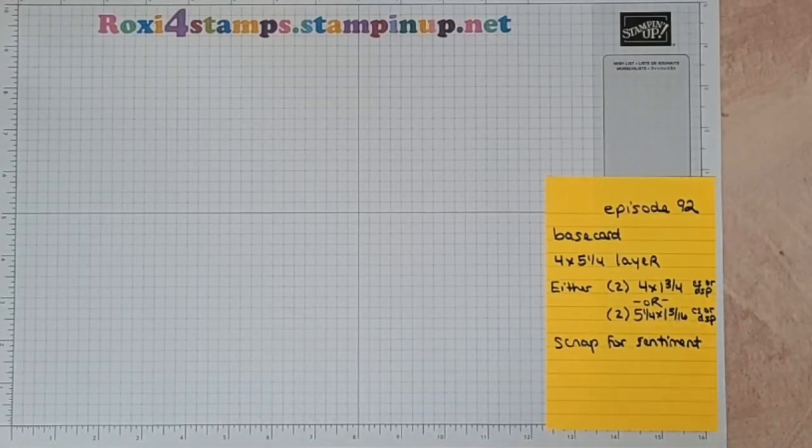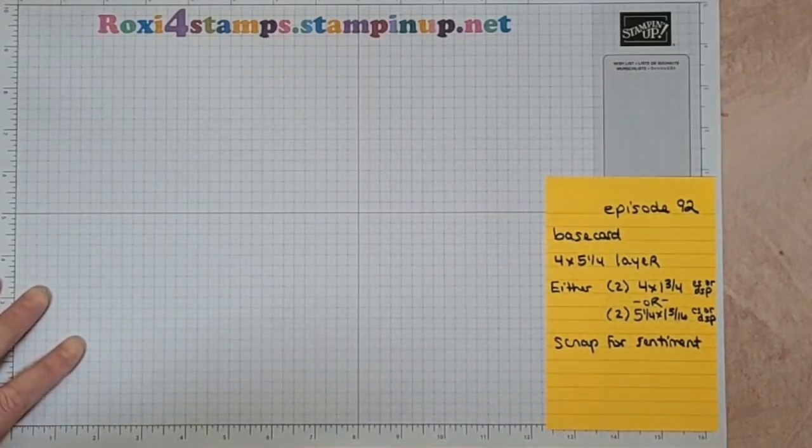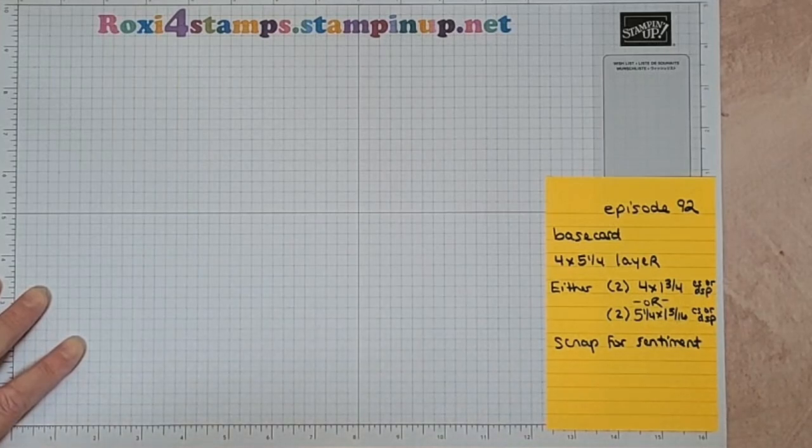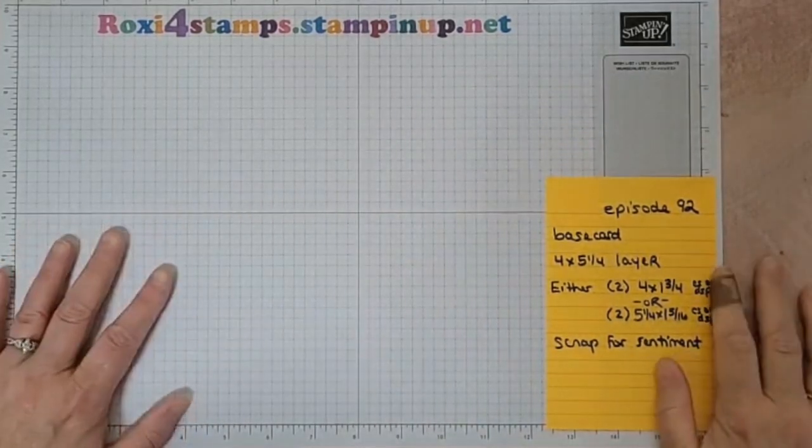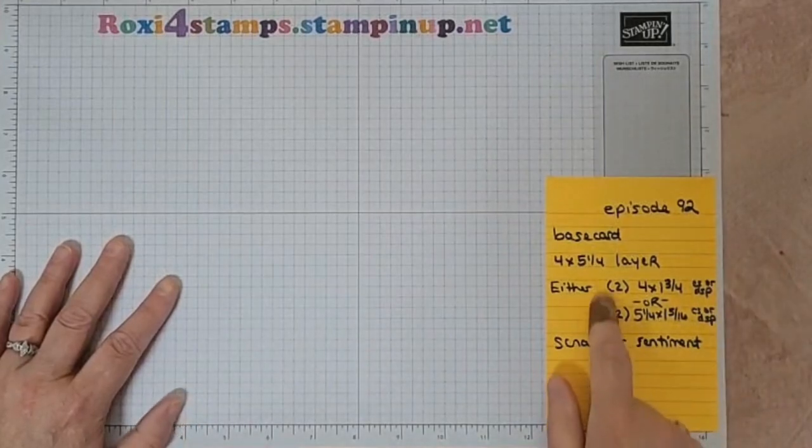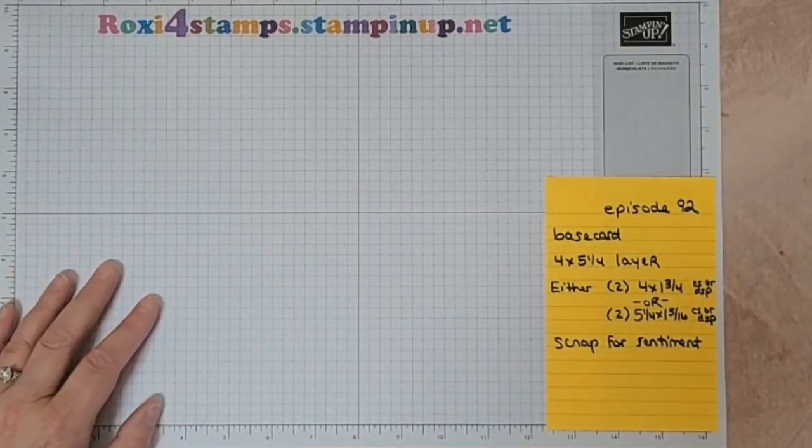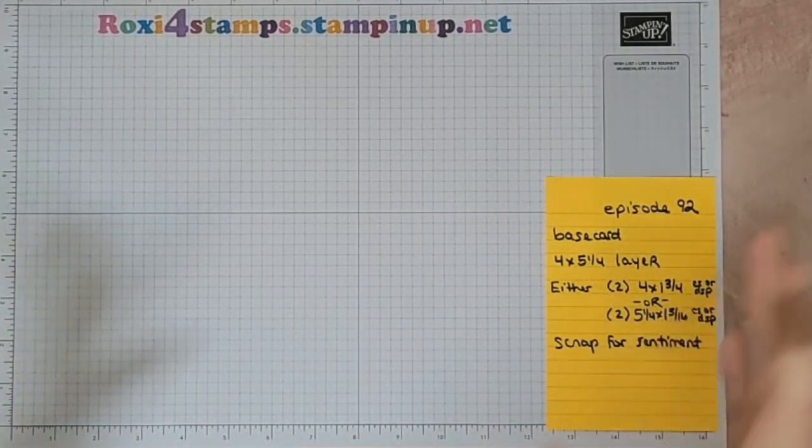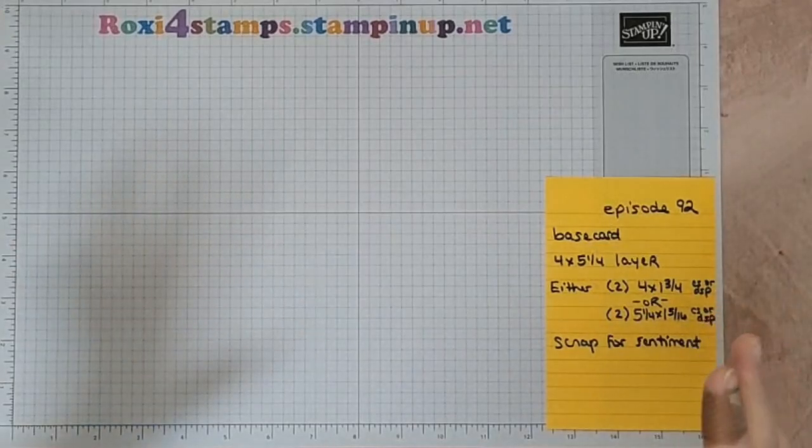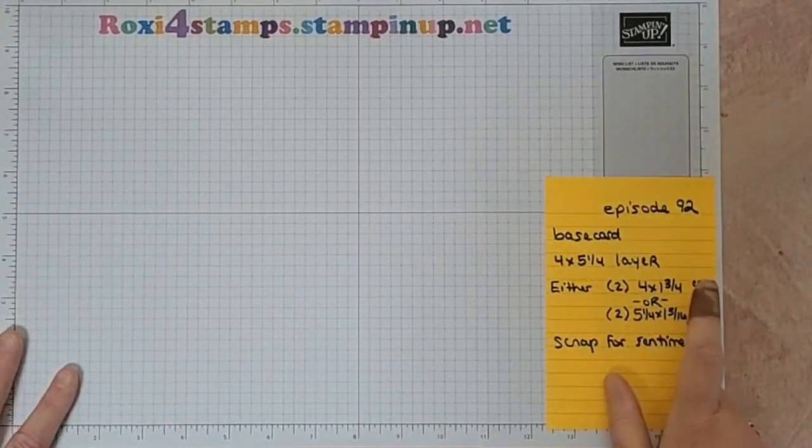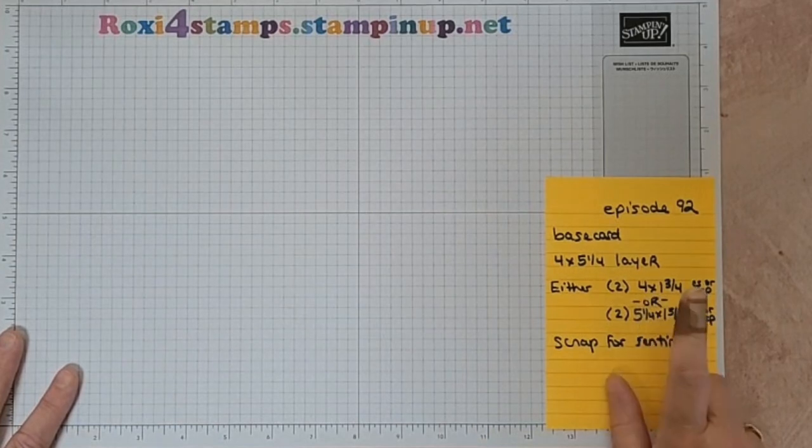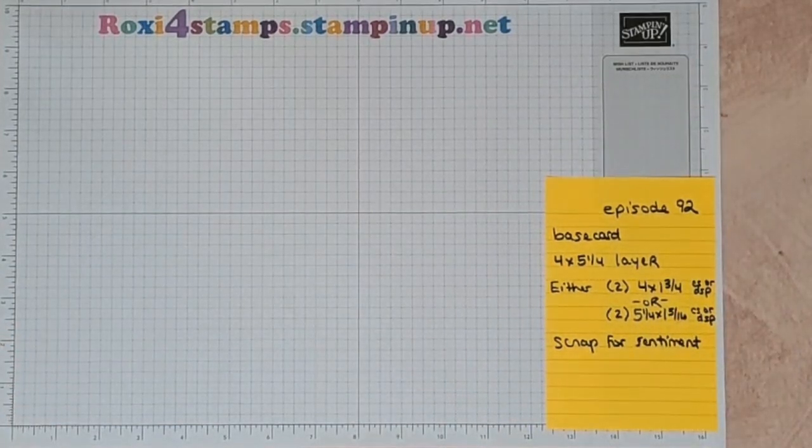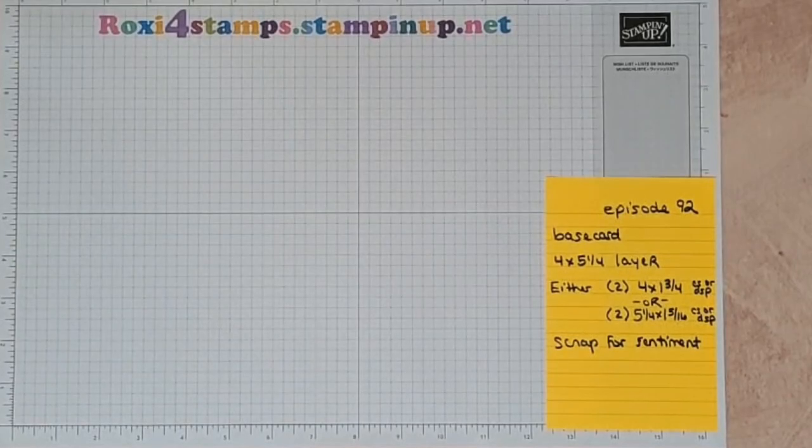Hi guys and welcome to Watch it Wednesday episode 92. Today we're going to do a very simplistic card. You have your choice whether you want your focal point to be horizontal or vertical. Let me show you what I mean. So let's get a base card, I'm going to use basic beige.